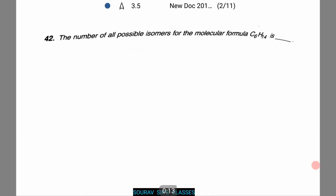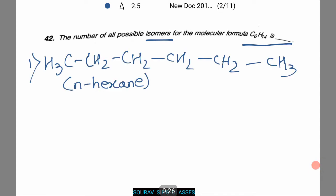Now we need to find all the possible isomers for the molecular formula C6H14. Let's see how many they are. The first one will be CH3, CH2, CH2, CH2, CH2 and lastly with a CH3. This is known as N-hexane.